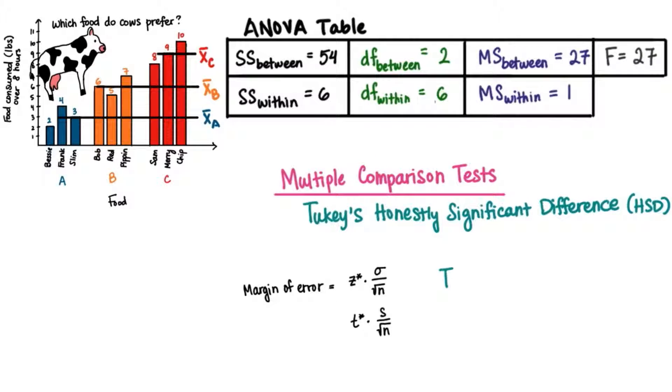But now when we're comparing three or more samples, we have a new statistic called Q. And we multiply this by the square root of the mean square for within subject variability divided by n.